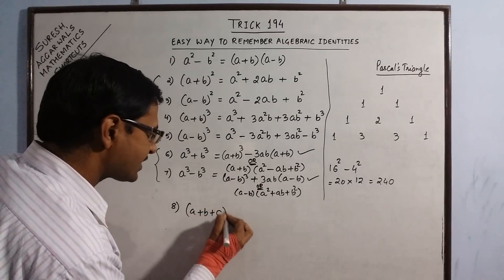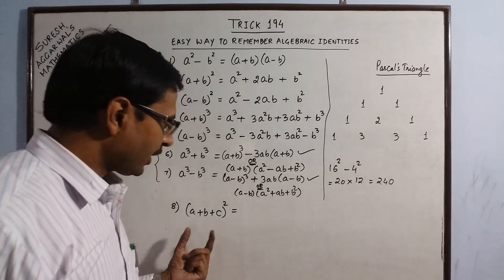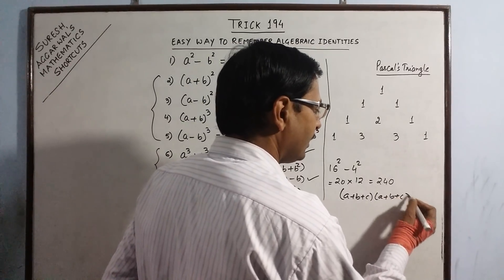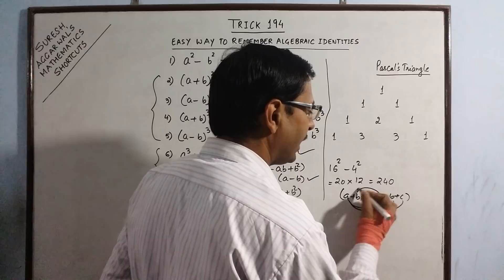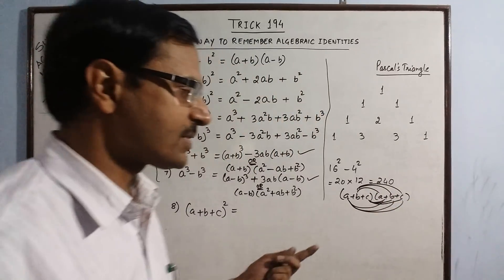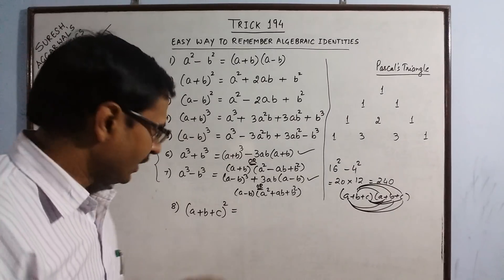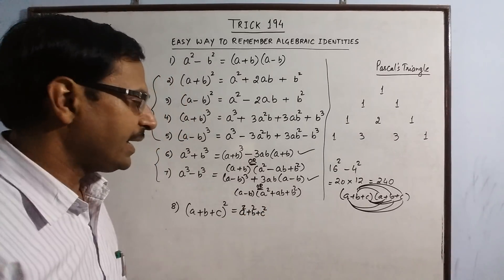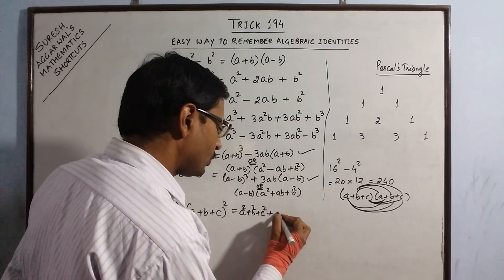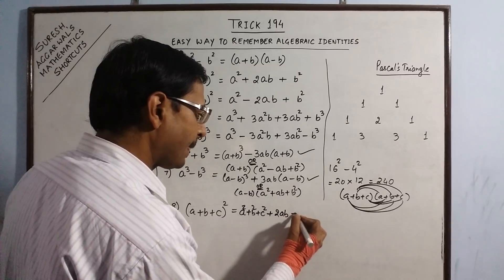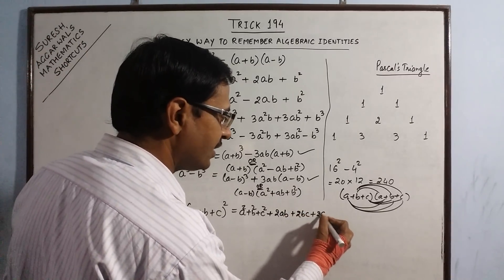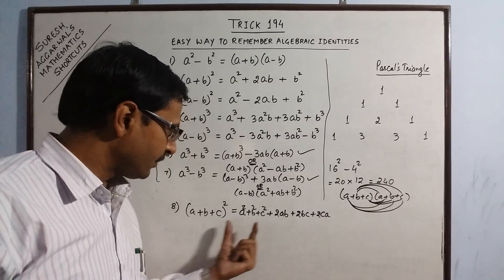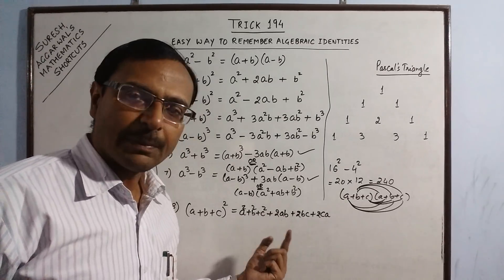Identity number 8 is the square of the sum of 3 terms. If you forget this in an examination, you can multiply A plus B plus C by A plus B plus C to get 9 terms, which when combined give 6 terms. Since we have a square and 3 terms, first do the independent squaring: A square plus B square plus C square, then add twice the product of each pair: 2AB, plus twice the product of second and third, plus twice the product of first and third.